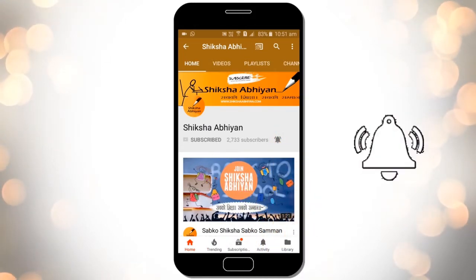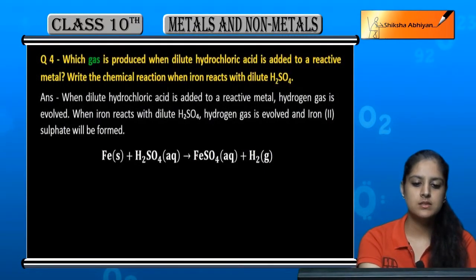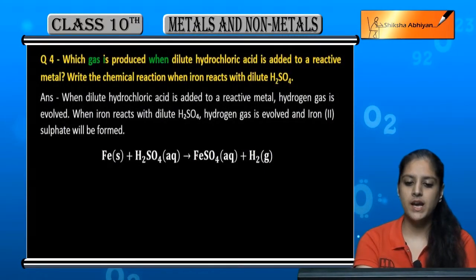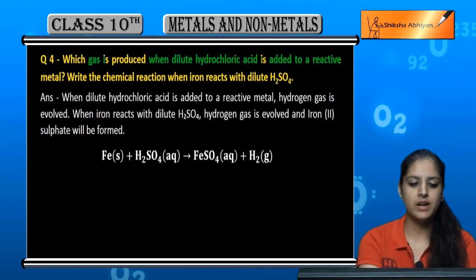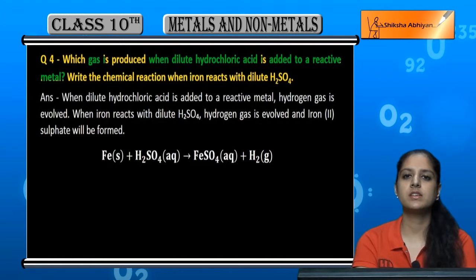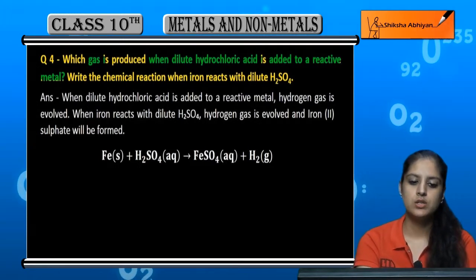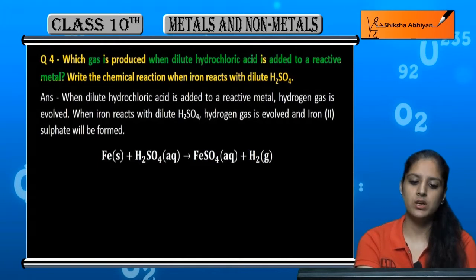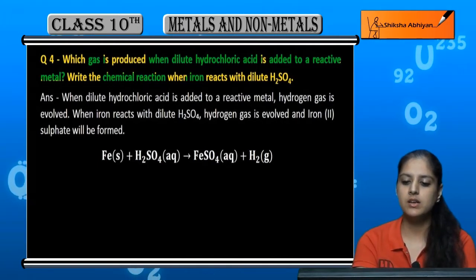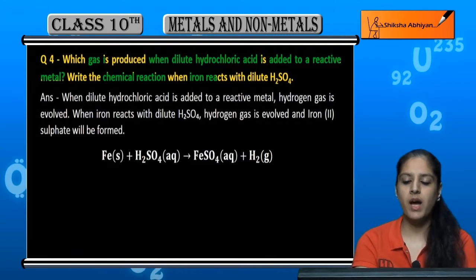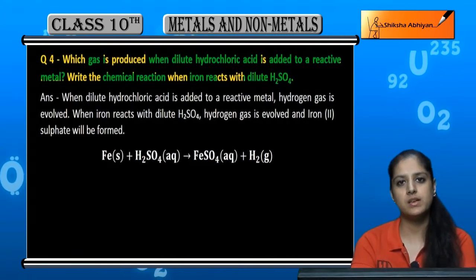Question number four: which gas is produced when dilute hydrochloric acid is added to a reactive metal? If we add HCl to a very reactive metal, which gas will be produced? We have to write the chemical equation for this reaction.